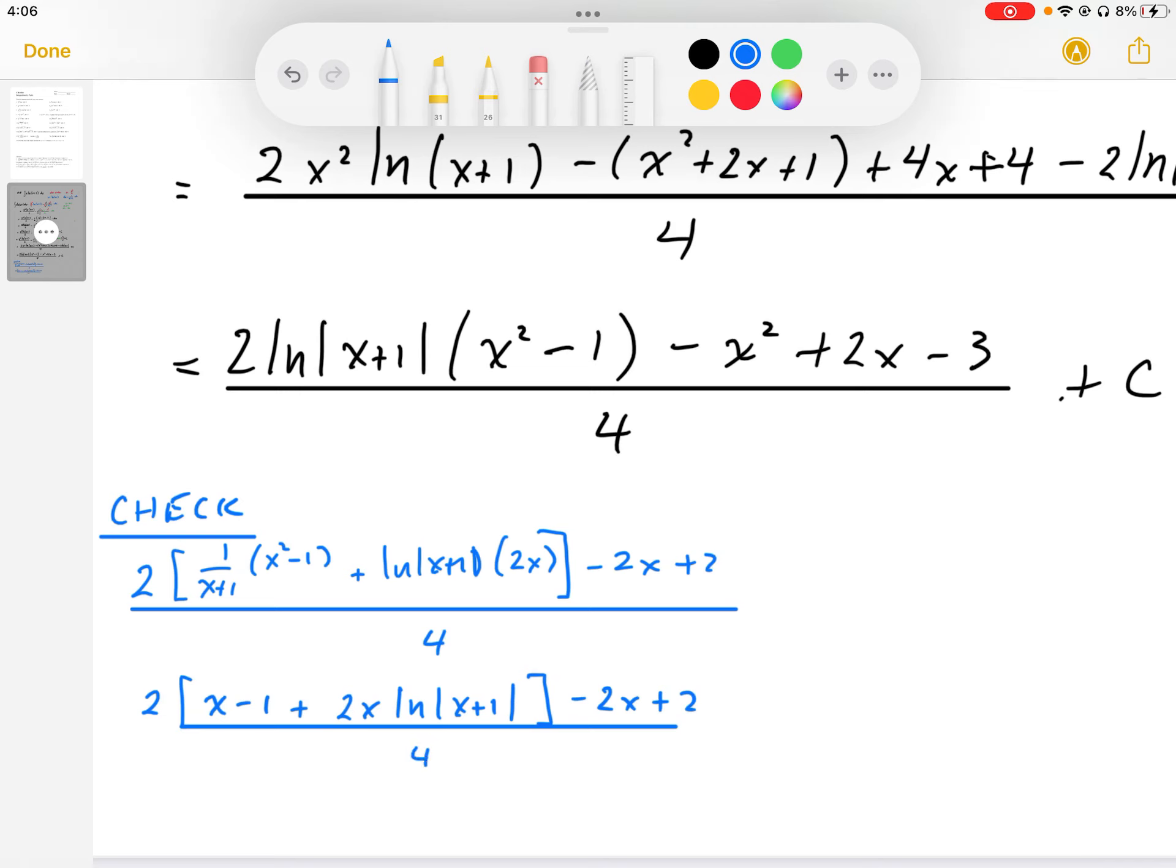And we can see that we have some terms cancel out. The 2 times this cancels out with these terms here, and then the 2 times 2, we end up with 4x log of x plus 1, all divided by 4. The 4s cancel out, and we end up back where we started: x log of x plus 1.